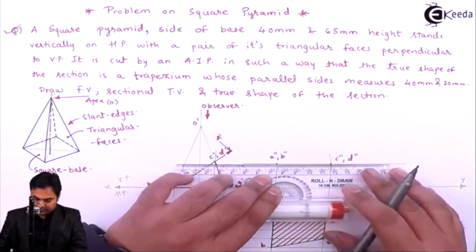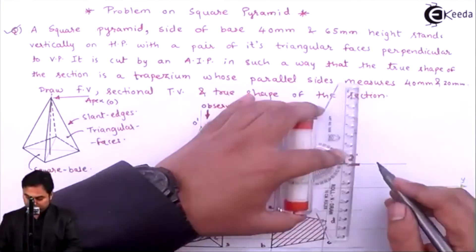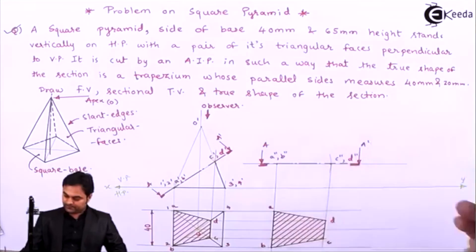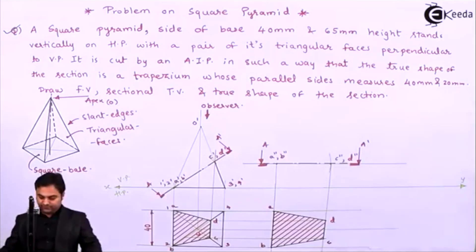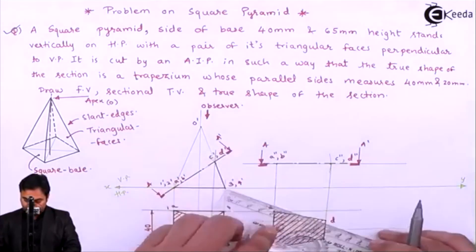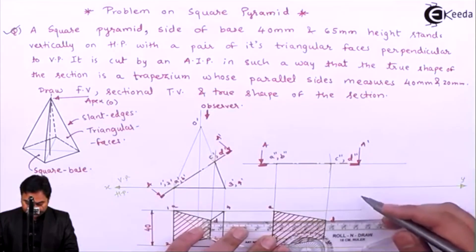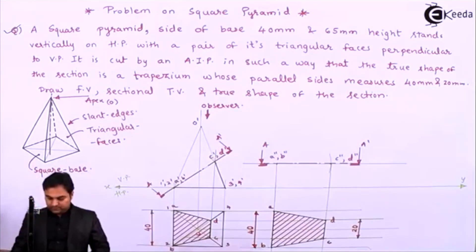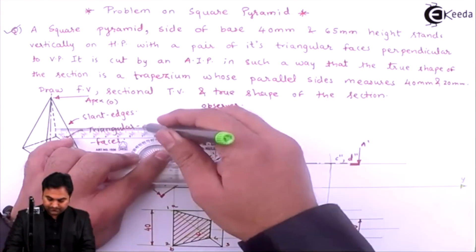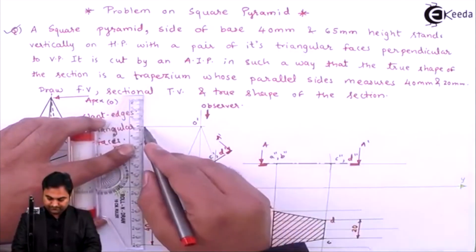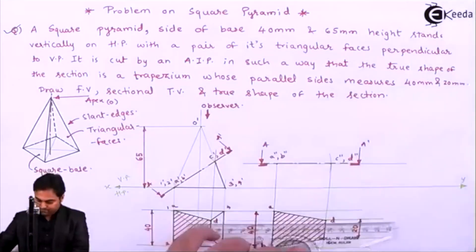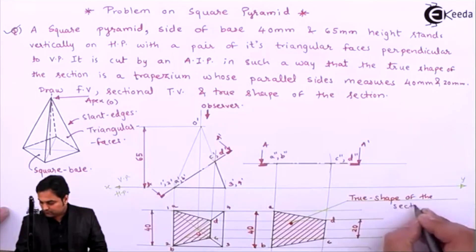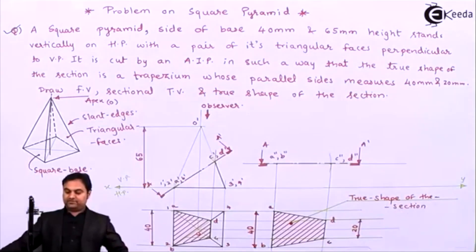Making the section plane dark and indicating the waving direction. Section plane is labeled A, A dash. For the true shape, giving the dimensions: A to B is 40 mm and C to D is 20 mm — these are the parallel sides of the trapezium. The height of the pyramid is 65 mm. With this, we complete the problem.